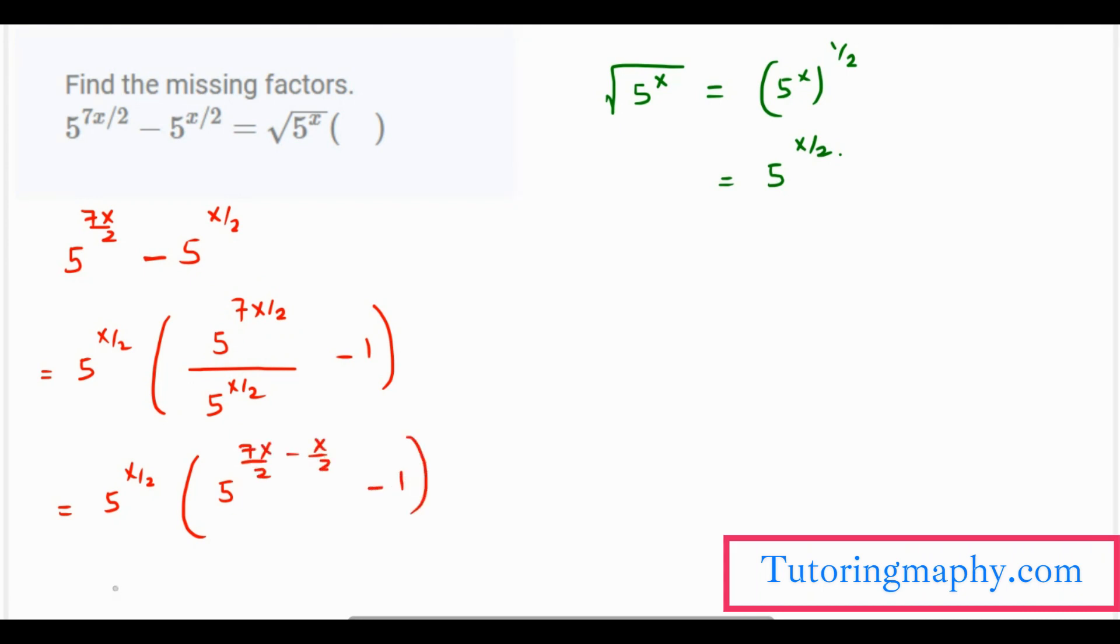So finally this becomes 5 raised to x over 2. Since the base is the same, 7x minus x is 6x, and 6x over 2 is 3x. So we have 5 raised to 3x minus 1.